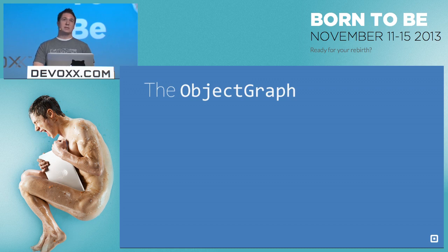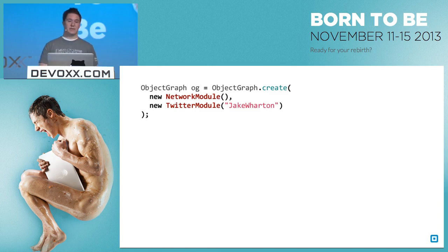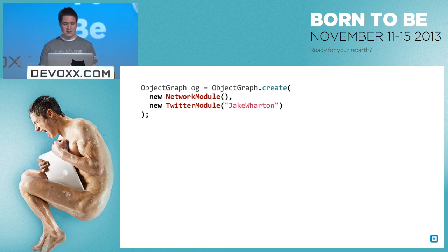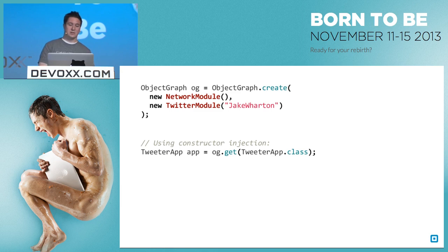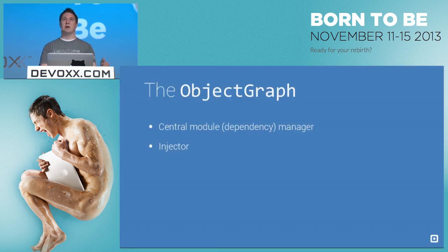So we're providing dependencies and requesting dependencies. How do we tie them together? That's what the object graph is for — the central manager of all dependencies and also our injector, the thing that performs injection. The syntax for creating an object graph: it's a static method that allows you to create them and you pass in any number of modules — these can be composed together. To request dependencies via constructor injection, you can call get on the graph. If we're using field injection and something else instantiated the object, we would use the inject method, which goes and sets values on those fields.